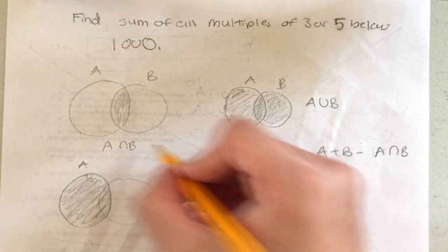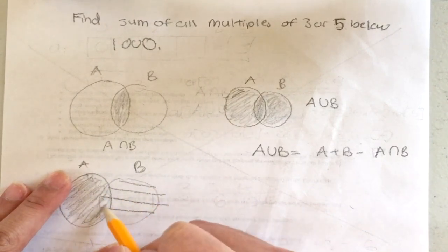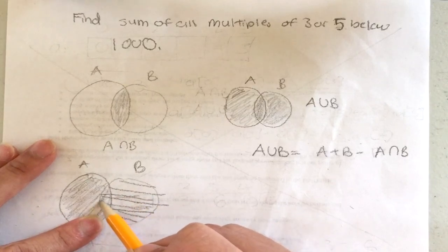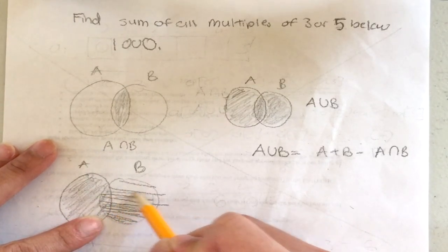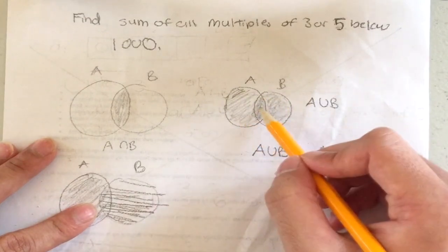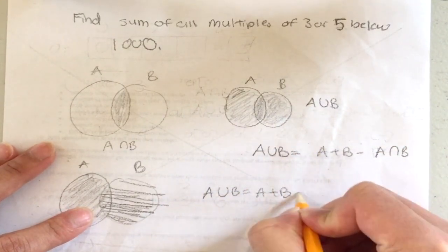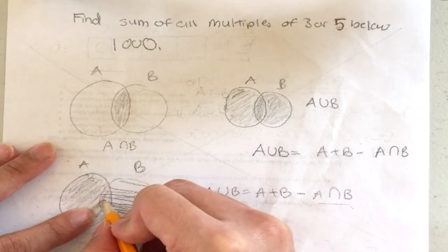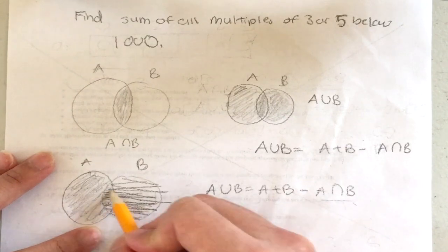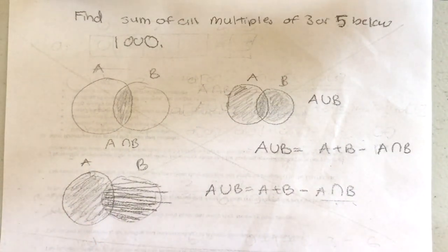The reason we subtract the intersection is because we're double counting. If I add all of A and then add all of B, some numbers in A also appear in B — they get counted twice. So I have to subtract at least one overlap to get the correct A union B. That's why: A union B = A + B − (A intersection B).